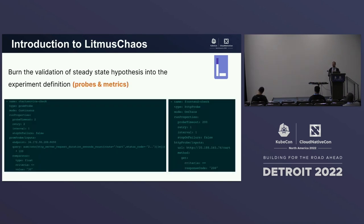Once you've logged into the control plane and configured your Chaos Hubs, you're ready to build your chaos scenario. You pick a fault and then define what you want measured during fault injection. We use something called probes for that. There's an HTTP probe where you can verify the status of your services, and a Prometheus probe where you run PromQL queries to check deviation in metrics. These probes are used for steady state hypothesis validation.